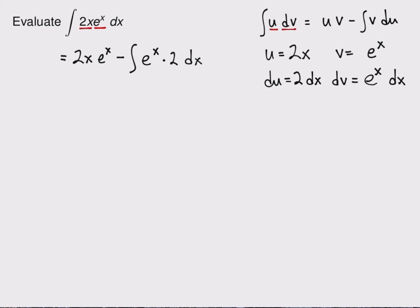The integration by parts formula has transformed this from an integral that we don't know how to do into one that's not too bad. So I'm going to simplify this a little. I get 2x e to the x minus 2 times the integral e to the x dx. And that integral of e to the x with respect to x is something we know how to do.